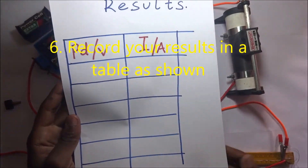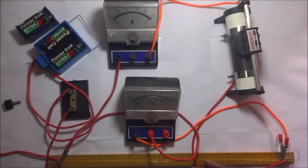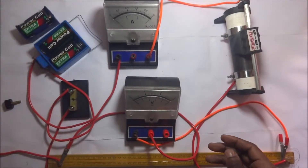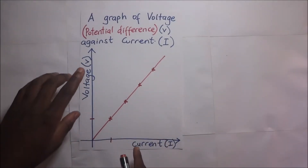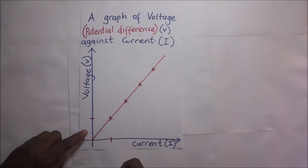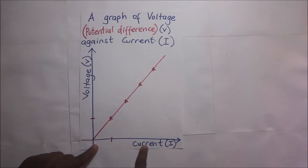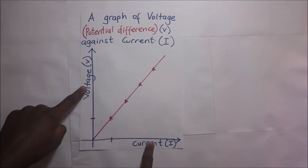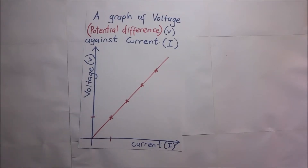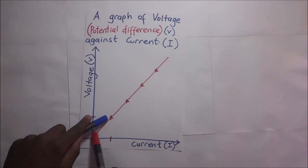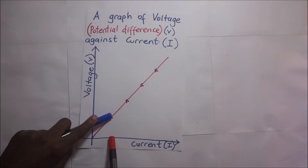After measuring the current and the potential difference, draw a graph of potential difference against current. When you plot your graph of voltage against current, you will realize that current is directly proportional to voltage. Every time the amount of current increases, voltage also increases.